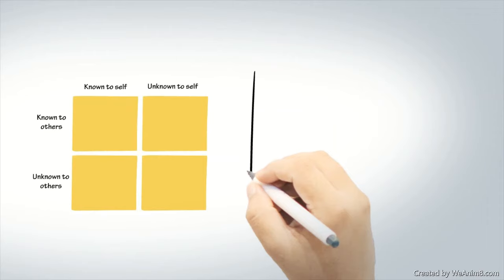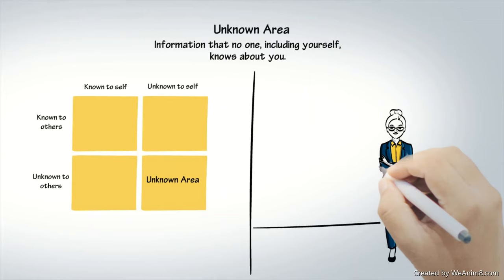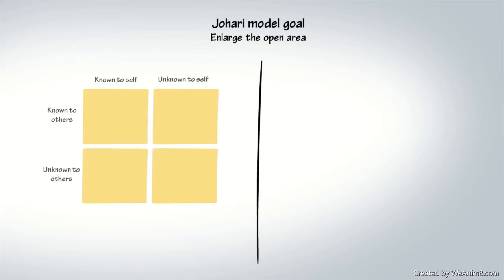The unknown area represents information that no one, including yourself, knows about you. Robin might have an undiscovered artistic talent, or unknown fears and insecurities that manifest in dominant behaviors.